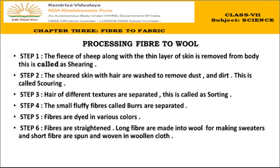Step 1: The fleece of the sheep — the coat of hair on their body — along with a thin layer of skin is removed. This process is called shearing. Step 2: The sheared skin with hair is washed to remove dust and dirt. This washing process is called scouring.